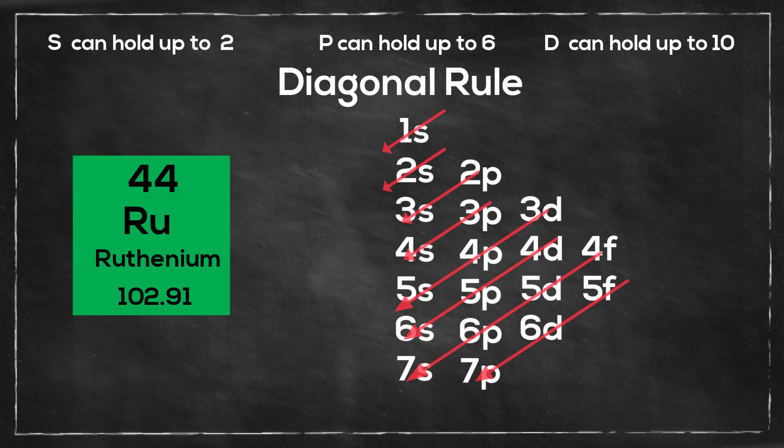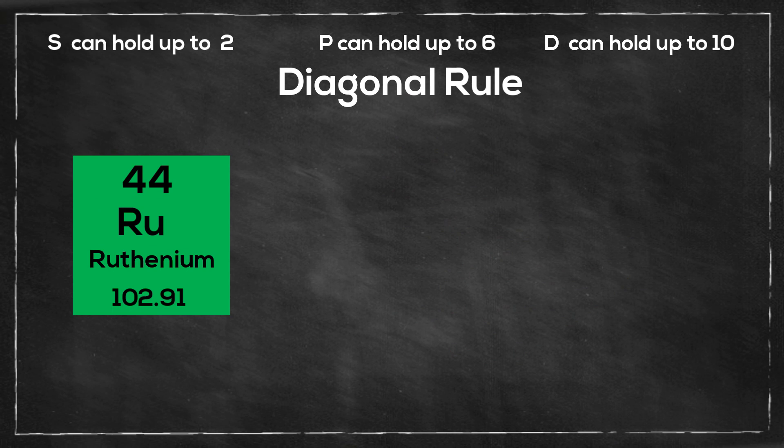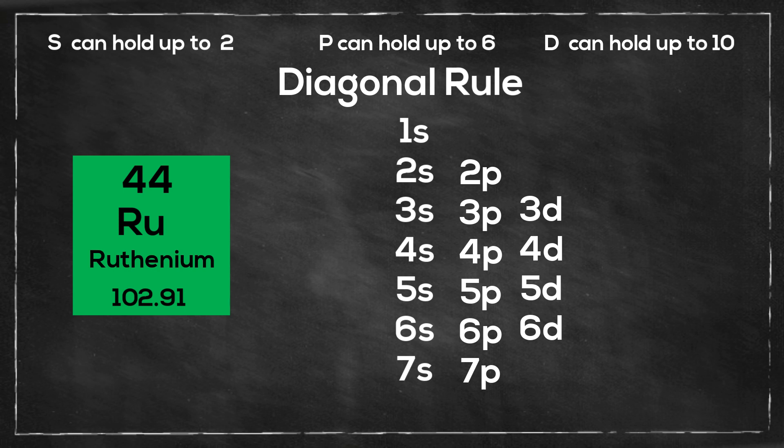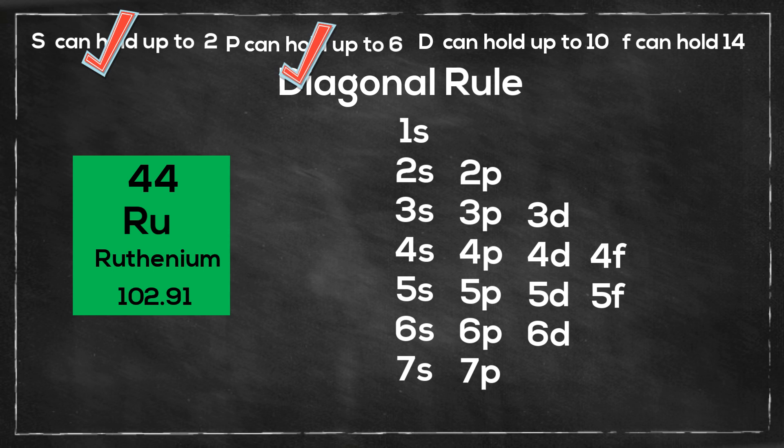I like to use the diagonal rule and so I need to draw the chart. I will start with the s's so I will draw 1 through 7, 1s, then I will move to the p orbitals, then the d orbitals, then the f orbitals. S orbitals can hold up to 2, the p orbitals can hold up to 6, the d orbitals can hold up to 10, and the f orbitals can hold up to 14, and they go up by 4 each time. And then I draw in the arrows.